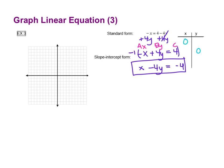So if you make x zero, that leaves you with negative 4y equals negative 4. Divide both sides by negative 4 and y is a positive 1. So there is one intercept.